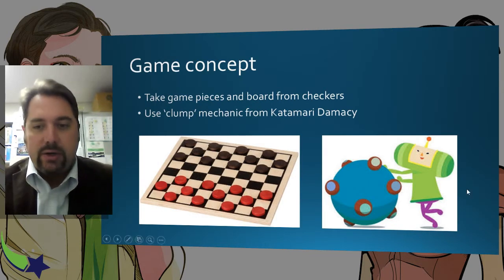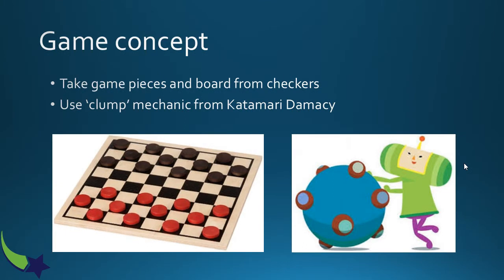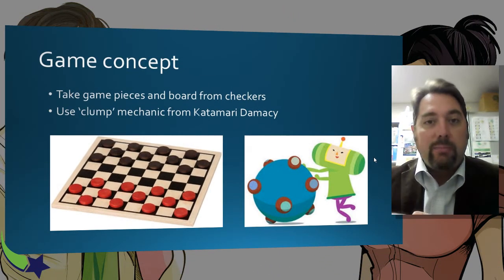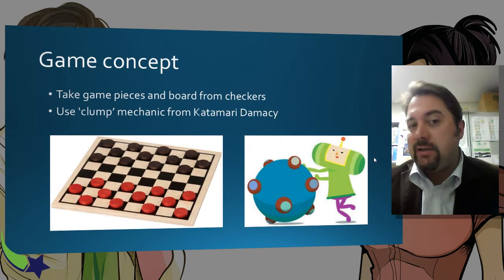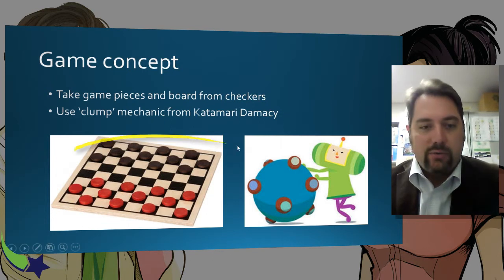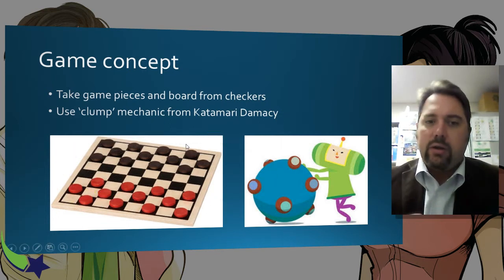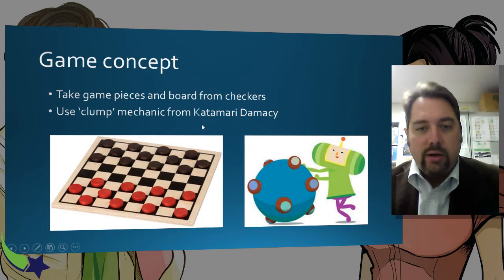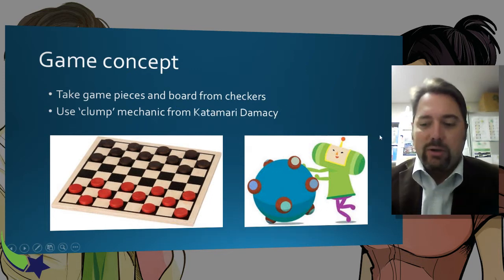The image here on the right being the Katamari game, the digital game, which is you basically rolling around a mass, and it clumps together objects which have less mass than it does. And then of course, we have traditional Checkers here. You're going to use the board and the pieces from that game. So we're going to take the clump mechanic from one and just kind of meld these games together and see how it works.